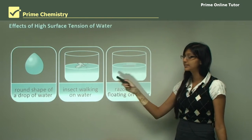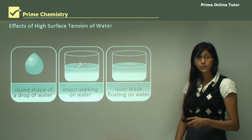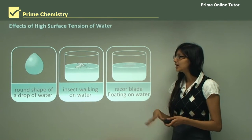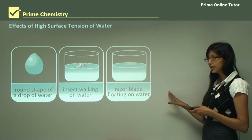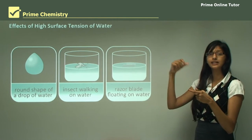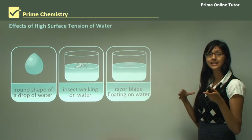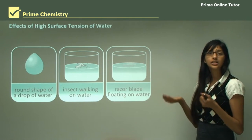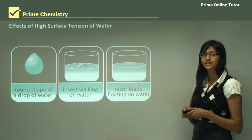Surface tension also allows insects to walk on water. The insects do not sink to the bottom because the forces of the molecules push the surface of the water upwards. The same applies to objects floating on water, such as a razor blade. If you place a razor blade on a glass of water, it will not sink because of its lower density and because water has a high surface tension holding it up.